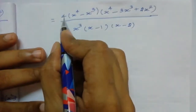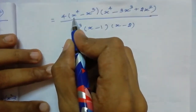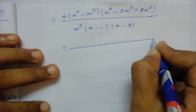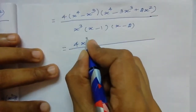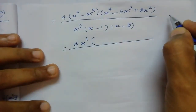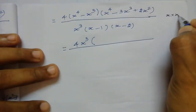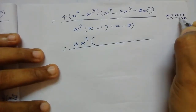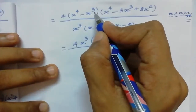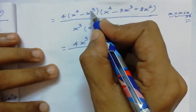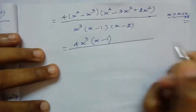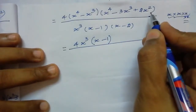For the first bracket we have common factor x³. Take x³ out of the bracket: 4 × x³ then in the bracket, x⁴ means x multiplied 4 times but we took out 3 times so the remaining is x. And x³ means x multiplied 3 times, already taken 3 times out, so the remaining is 1.